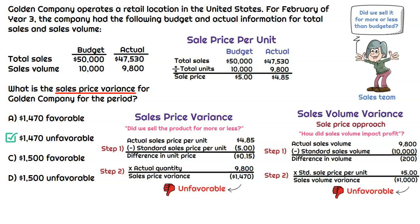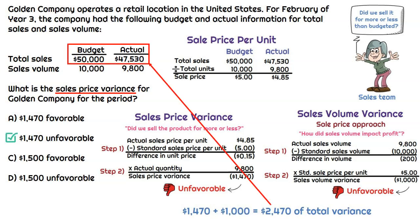The whole reason I wanted to show both variance calculations is that if we add them together — the $1,470 sales price variance plus the $1,000 sales volume variance — that equals a total variance of $2,470. And that actually ends up being the total difference between the budget and actual for sales. So that is how we can explain what the driver was for that decrease in sales.